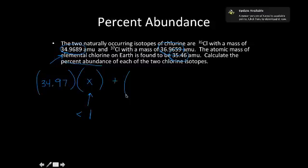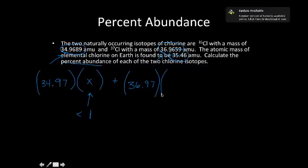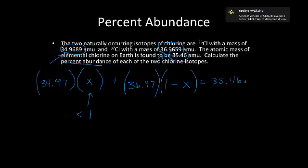I'm going to add that to the atomic mass of isotope B, which is 36.97. I'm rounding to make the math a little easier. I multiply that by the percent abundance of isotope B — I don't know that either, but since I'm finding X, I'll represent the percent abundance of isotope B with the expression 1 minus X. This way I get two percentages by solving for one variable. This equals the elemental atomic mass: 35.46 amu.